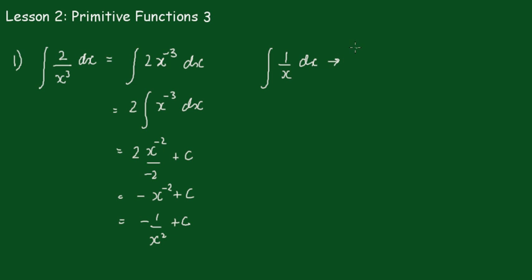If we go ahead and try to apply the rule, we have to add 1 to the index. We would get x to the 0 over 0, so we try to divide by 0, which we can't do. So this is not allowed. But later on we'll find there will be a way of integrating that function, as we'll see in a later section.